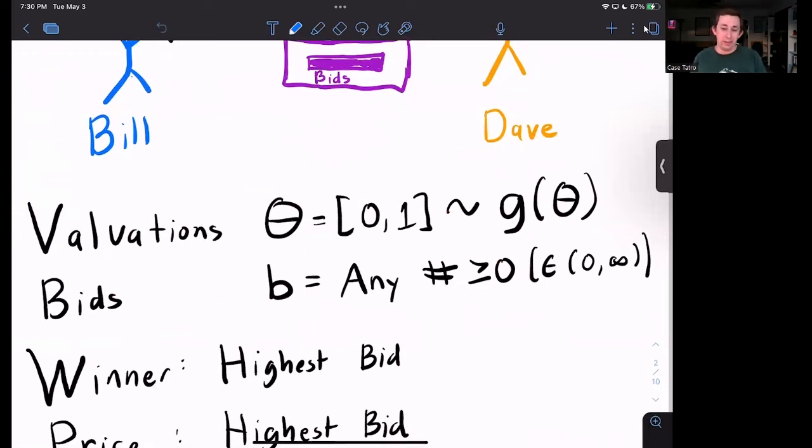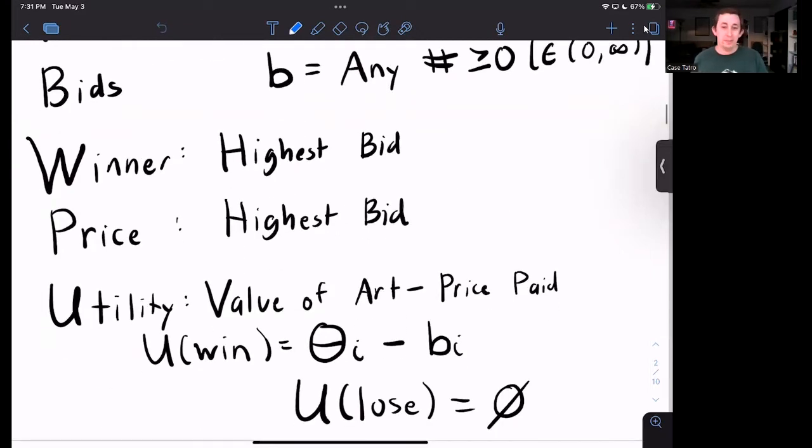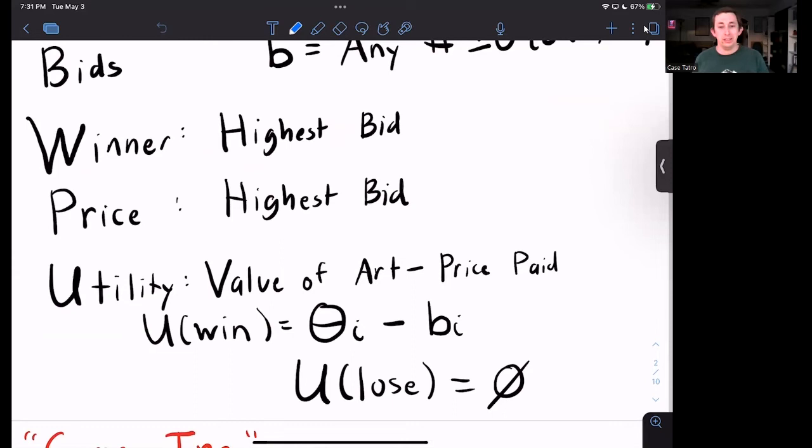We're going to say that Bill and Dave value the art somewhere between zero and one. It's going to be a uniform distribution. We're going to let them bid anything they want, any real number that's greater than zero. The winner has the highest bid. They're going to pay the highest bid for the price.